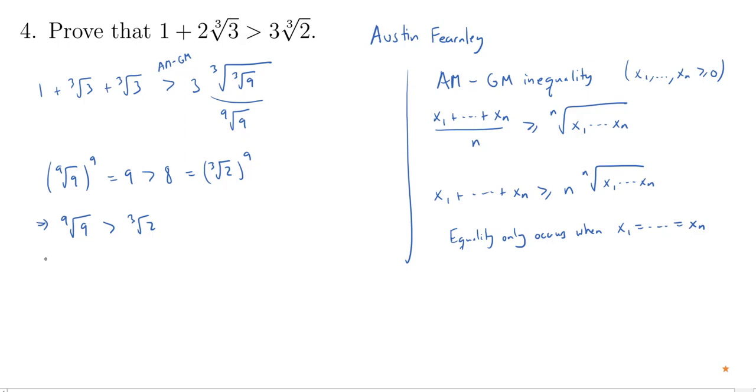Of course, if I multiply everything by 3, then 3 times the ninth root of 9 will be greater than 3 times the cube root of 2. But 3 times the ninth root of 9 is precisely what I had on the right-hand side here. This was 3 times the ninth root of 9, and now I know that's greater than 3 times the cube root of 2. And so in total, my original expression on the left, 1 plus twice the cube root of 3, is greater than 3 times the cube root of 2.